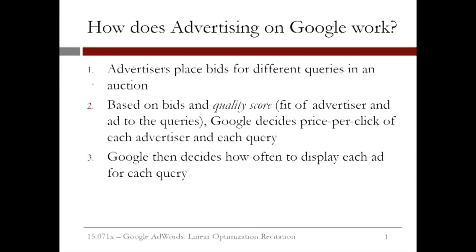The process by which Google determines which ads to display for which queries consists of three key steps. First, Google runs an auction where advertisers place bids for different queries that they want to display their ads on. Next, Google uses each bid in a metric known as the quality score,